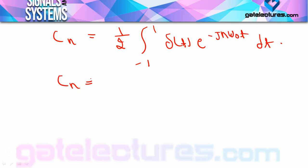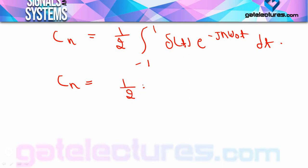Using the integration property of the impulse (delta function): for δ(t − t₀), we substitute t = t₀ into the remaining function. Here t₀ = 0, so e^(−jnω₀·0) = e⁰ = 1. Therefore cn = 1/2. This impulse integration property has been taught multiple times before.